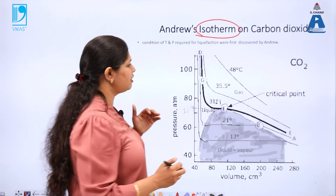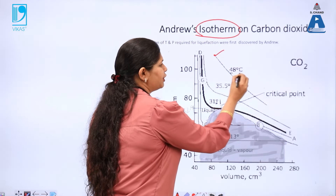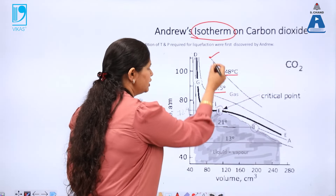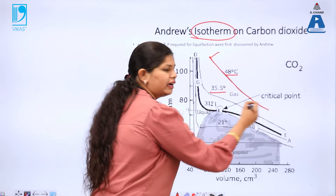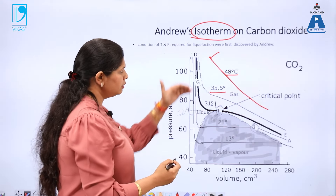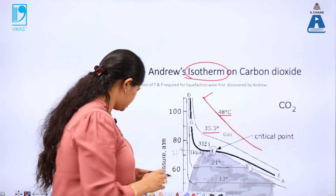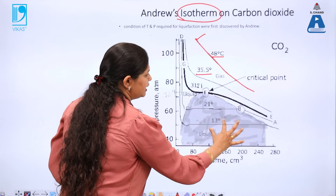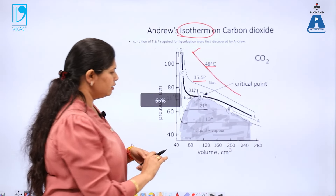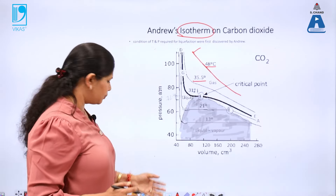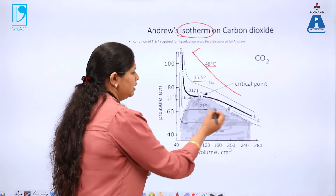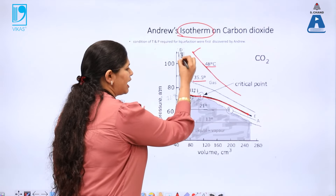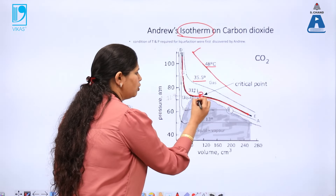In this graph you can see various isotherms. This is the isotherm at 48 degree Celsius and this is the isotherm at 35 degree Celsius — pressure and volume variation at those temperatures. On observing these isotherms, Andrews monitored that the plots are not the same; there is a variation in the plots. The isotherm at 31.1 degree Celsius has a certain break in the curve — it is not similar to the curve before.